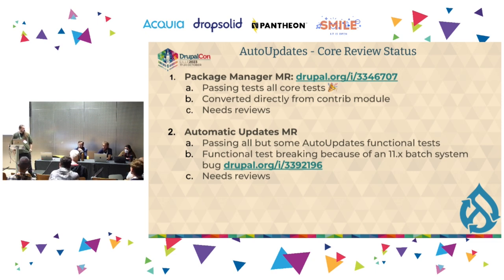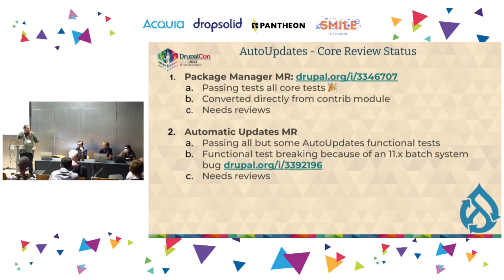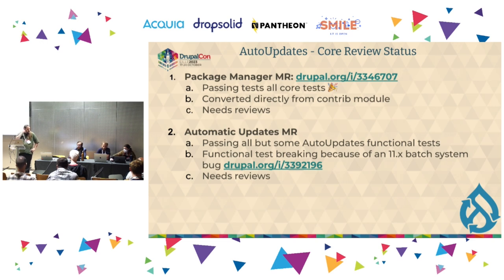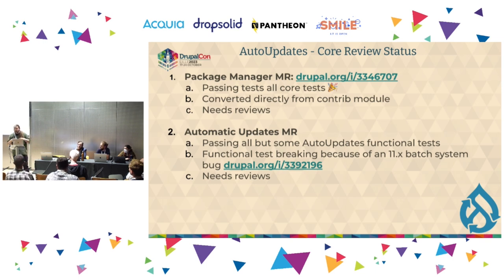The Package Manager merge request against Drupal core is ready. It's passing every core test, being generated automatically from the contrib module, fully automated, and it's in review now — so if anybody's interested in digging into that, you're very welcome to. The Automatic Updates merge request is pretty much passing all tests, but there is a regression deep in the crevices of Drupal 11's batch system that is causing some tests to fail — though it's passing on Drupal 10. We'll need to figure that out, but it is ready for review. It's worth noting that Automatic Updates is two big components: Package Manager and Automatic Updates. Package Manager will also automate Composer for Project Browser.